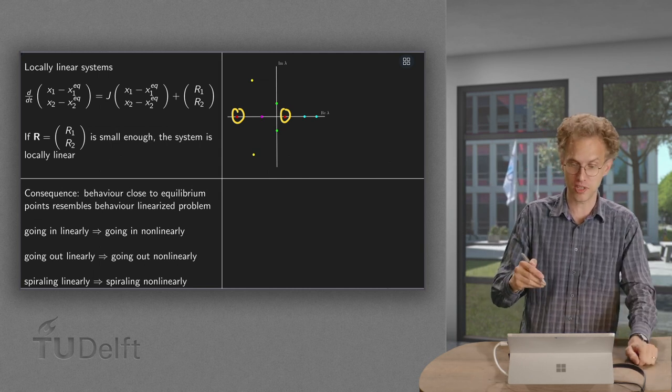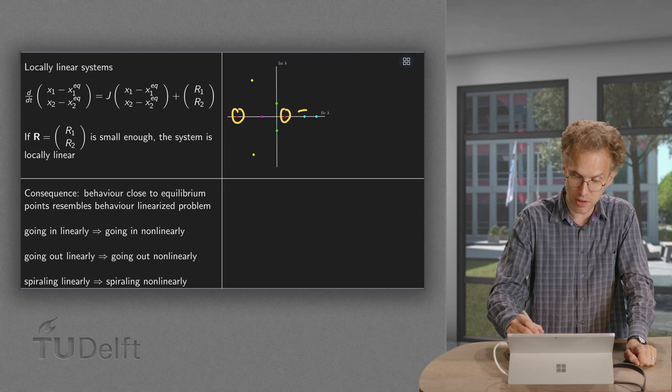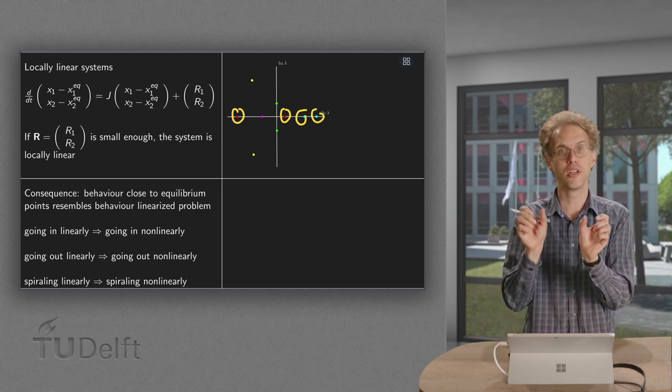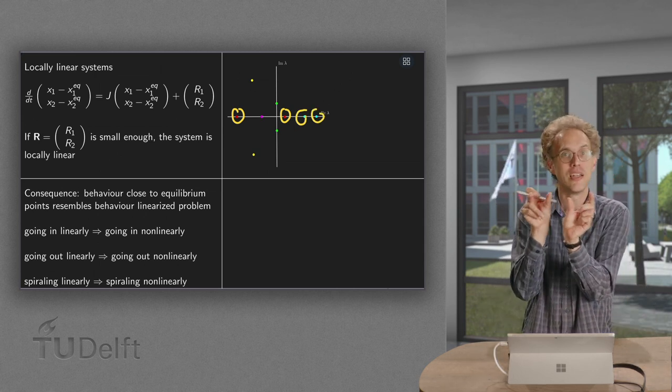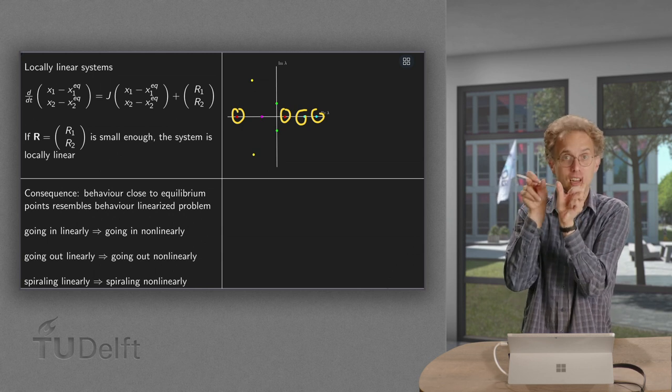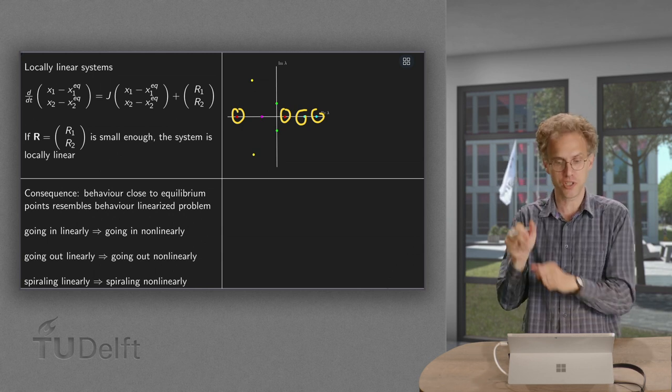If we have two real and positive eigenvalues, perturb them again slightly, they may shift a bit, but they will remain real and positive.